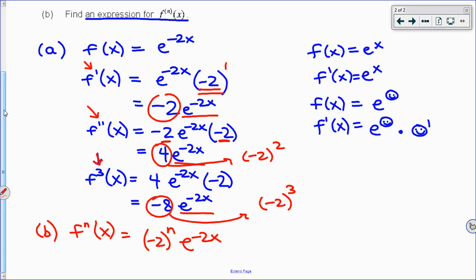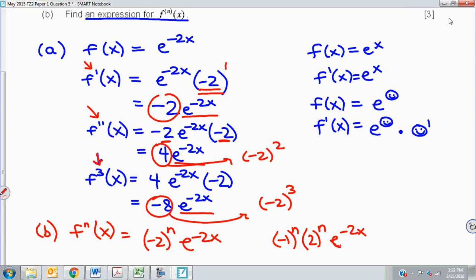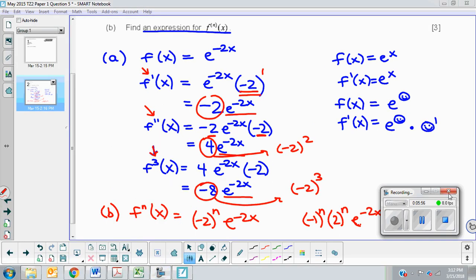Or they also would have accepted (-1)^n to show that you're alternating signs, and then 2^n, times e^(-2x). Basically, to separate out the coefficient number where that comes from, and then the negative sign where that comes from. And that is all. Thank you.